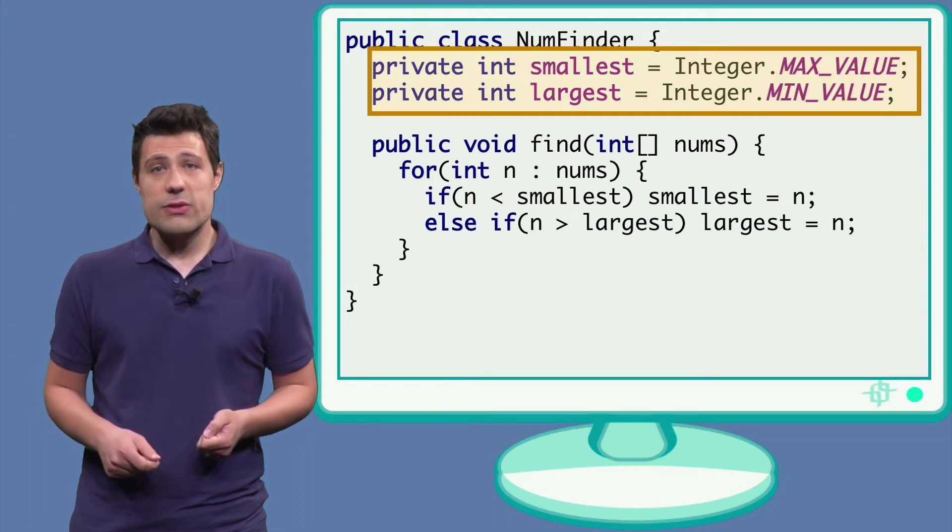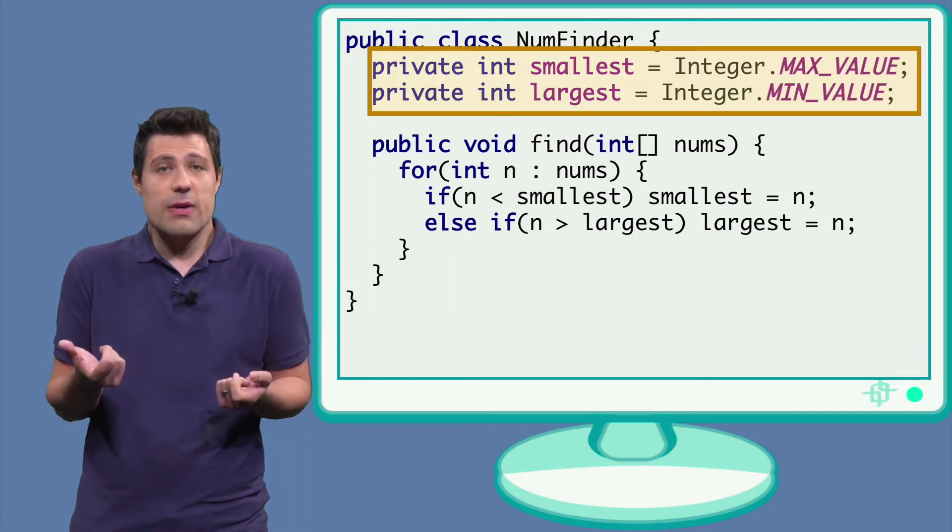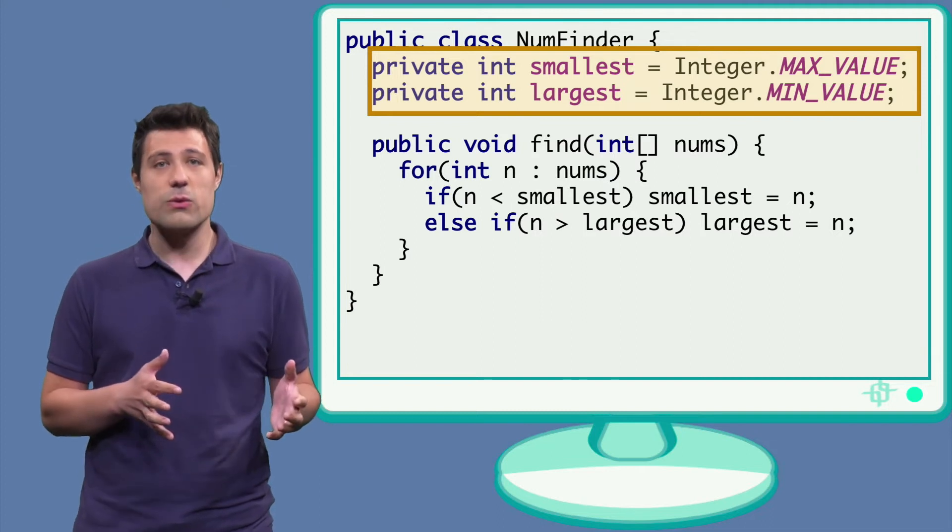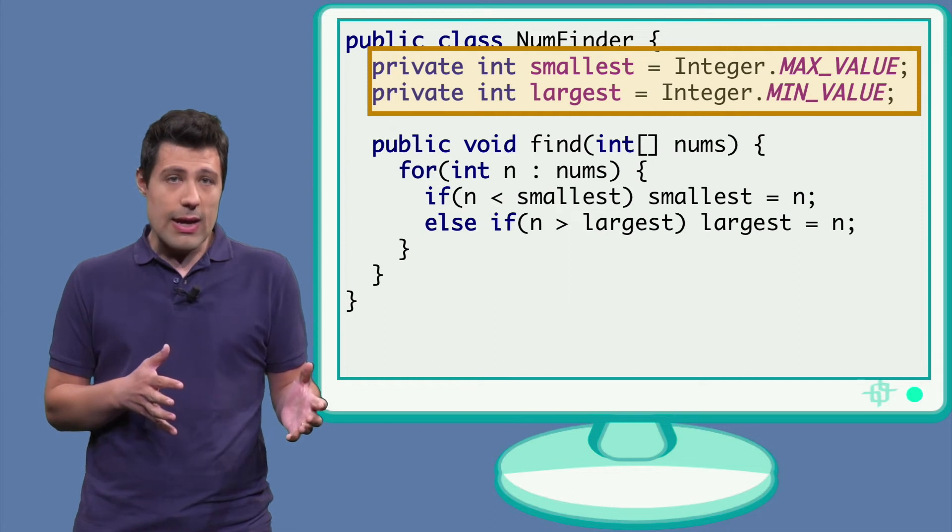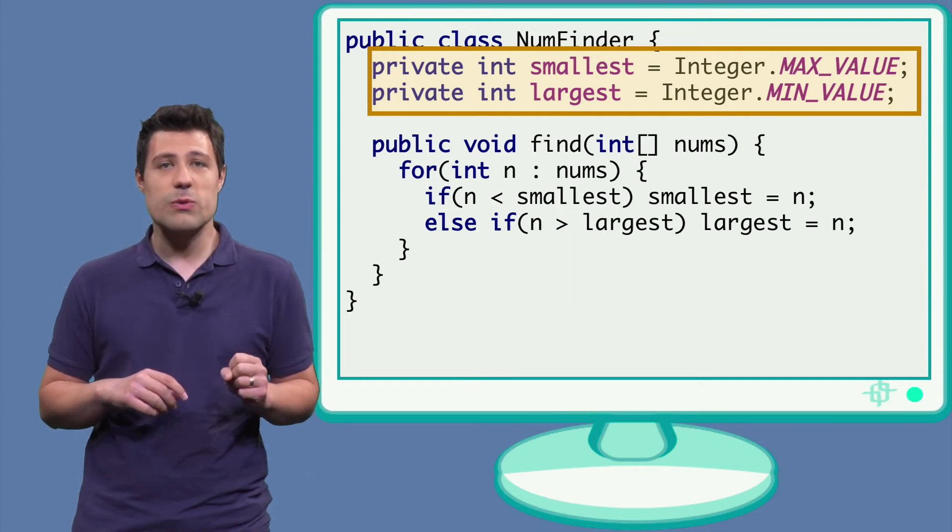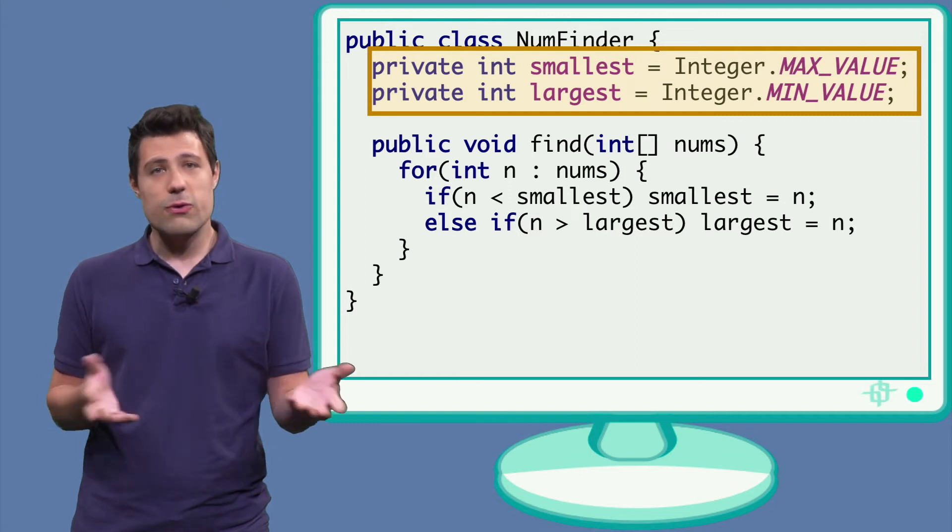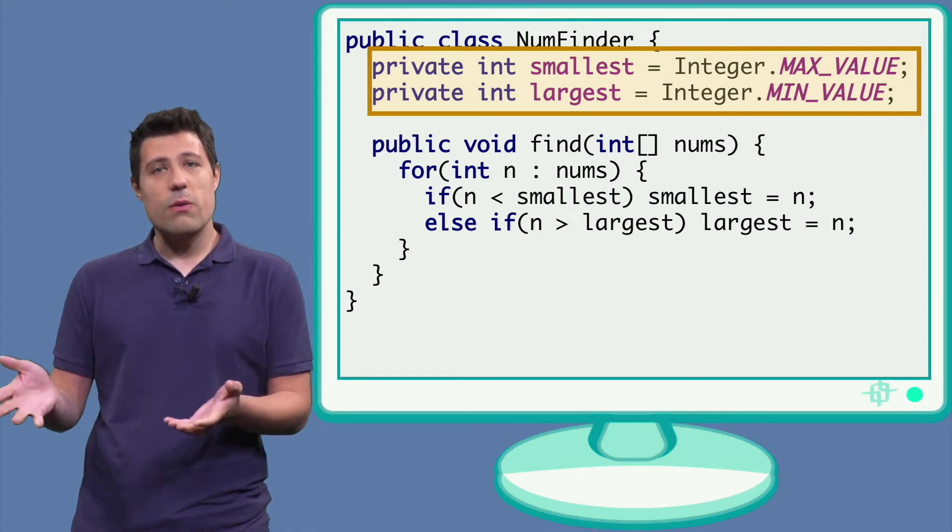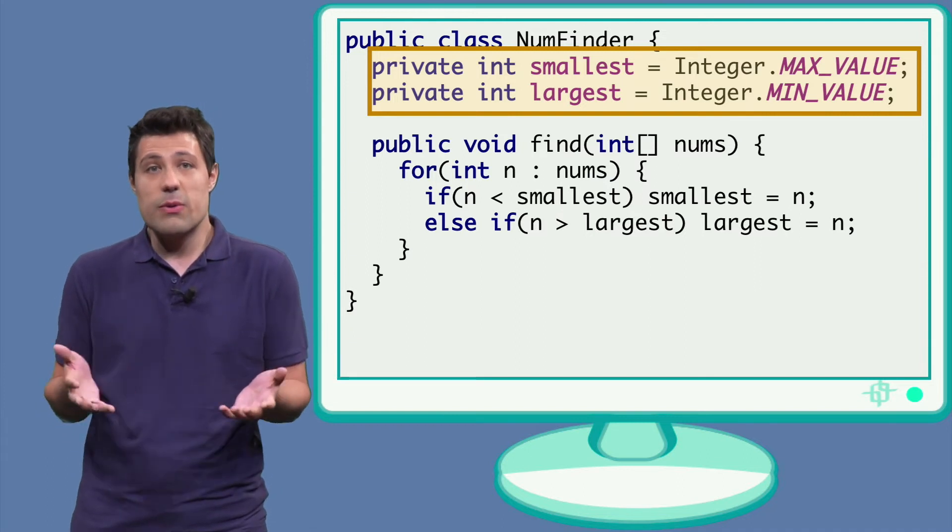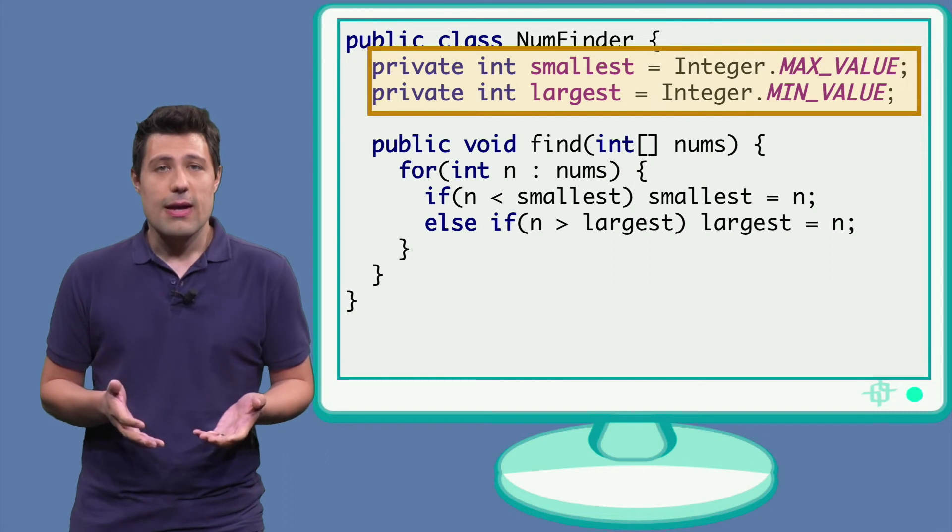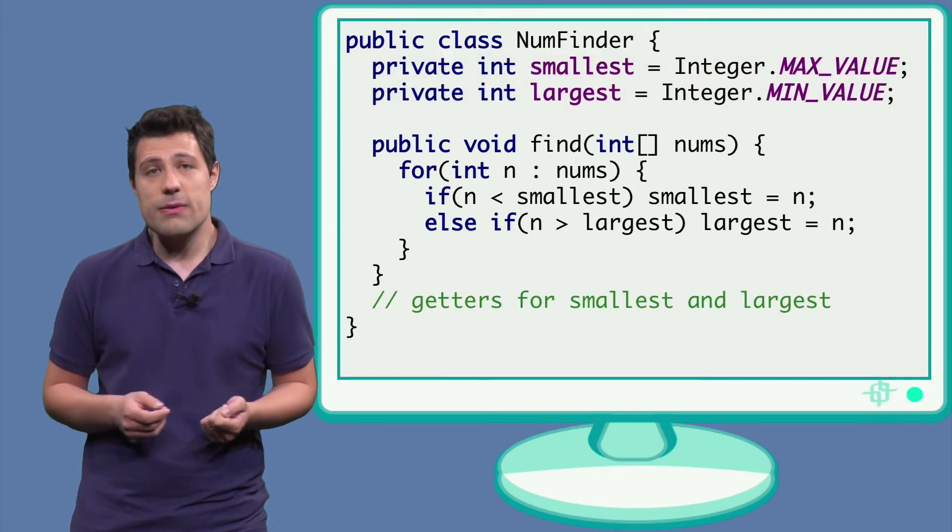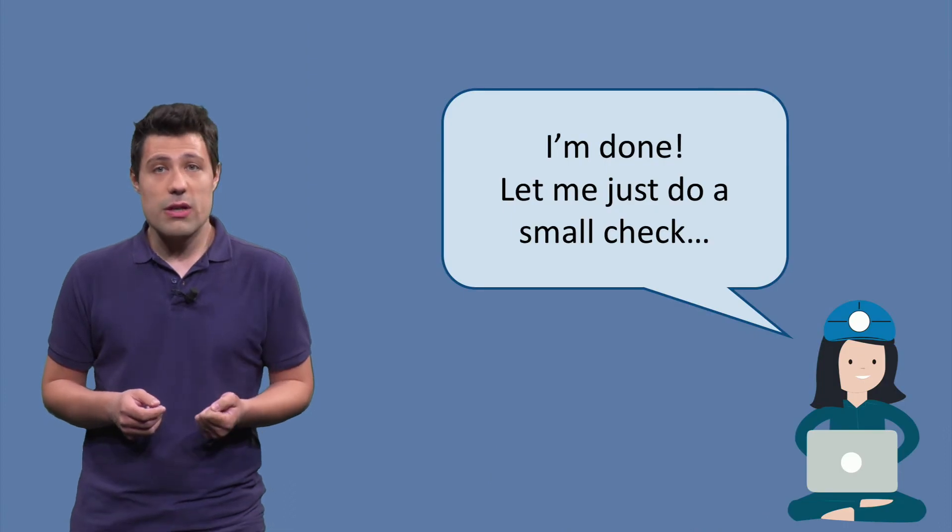We need to initialize, of course, the smallest and the largest fields. And let's do this in a smart way. Let's make the smallest to be equal to the largest integer possible. In this way, any first number in the n variable will always be smaller and thus replaced. And the other way around for the largest. Any first number in the n variable will replace the number in the largest field. Then we just add some getters for these fields. That's the way we do in Java. And that's it. We are done with the implementation.